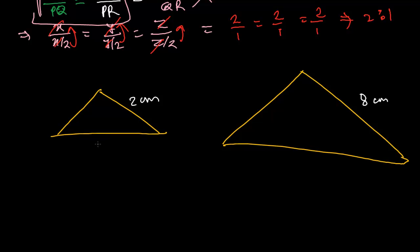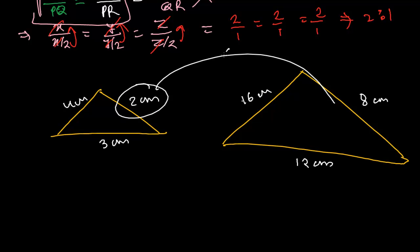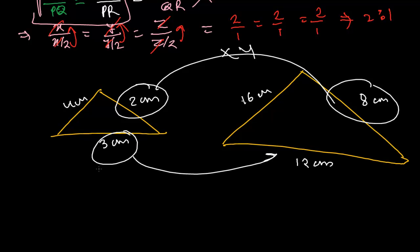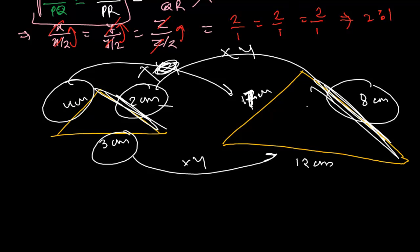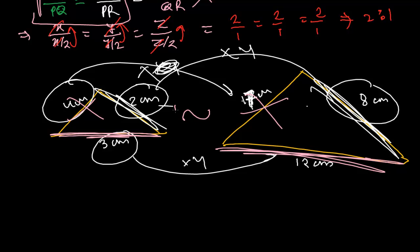Another example: suppose the smaller triangle has sides 2cm, 3cm, and 4cm. If the bigger triangle's sides are 8cm, 12cm, and 16cm, then each side is 4 times — all proportional, so they are similar. But if that last side was 17cm instead of 16cm, then it is not 4 times — that pair of sides is not proportional. So we can't say they are similar. All three sides must be proportional, not just two.